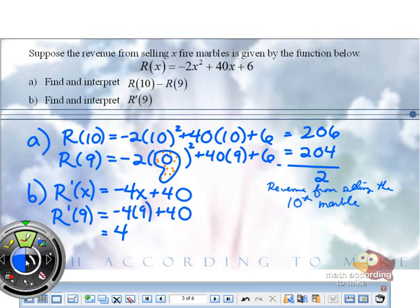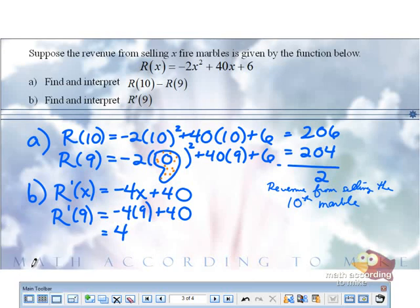So who wants to interpret this one? Well, remember our derivative is a rate of change. And since our derivative is a positive number, namely 4, that means revenue is what? Increasing.